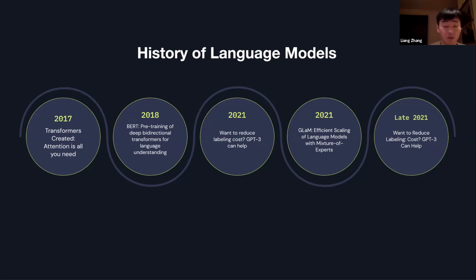Fast forward to 2021 to now — there are new techniques, or machine learning paradigms, that can increase the accuracy of these large language models, like few-shot learning and active learning. And currently we have RAG, which stands for Retrieval Augmented Generation.